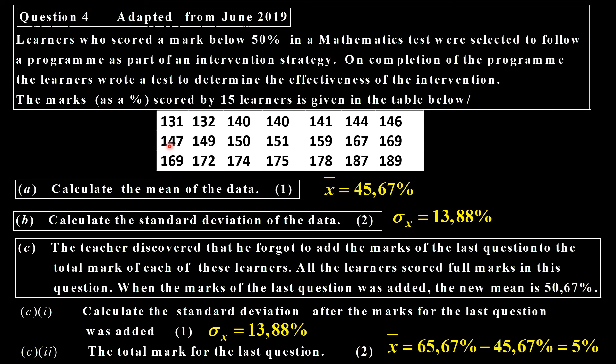So that is 65.67 minus 45.67, and that gives us 5%.